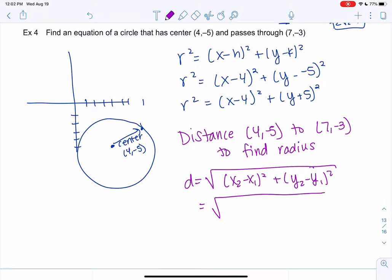So if you feel confident, pause it and try it. Otherwise, here we go. So x2 can be 7, x1 can be 4. So 7 minus 4 squared, negative 3 minus negative 5 for the y's squared. So what do we get? We get 3 squared plus 2 squared. So what's that? 9 plus 4.